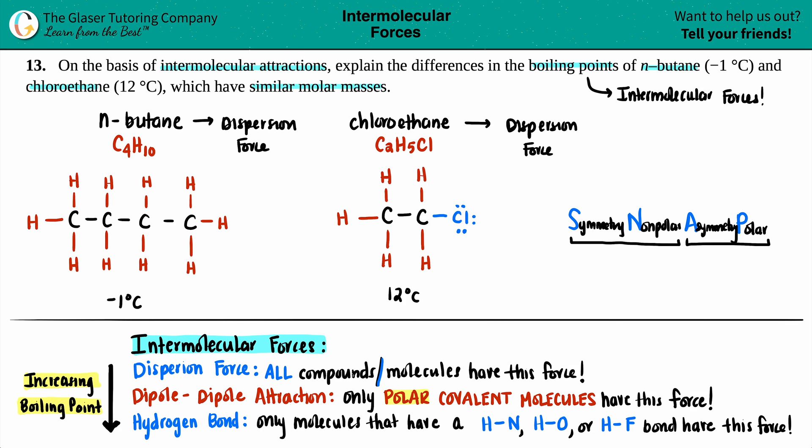So if we want that dipole-dipole attraction, we're looking for polar molecules. The polar molecule is the one that has the asymmetry. So let's look at the butane. If I cut this molecule in half, I literally have the same exact thing on both sides. Is that symmetrical or asymmetrical? Yeah, this is completely symmetrical. So this molecule, n-butane, would be classified as nonpolar. And since it's nonpolar, it does not have dipole-dipole attractions.